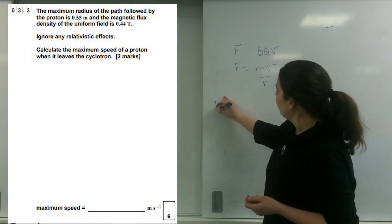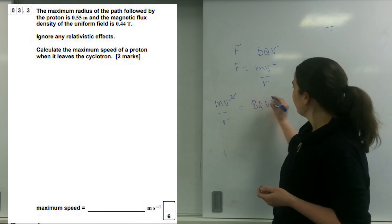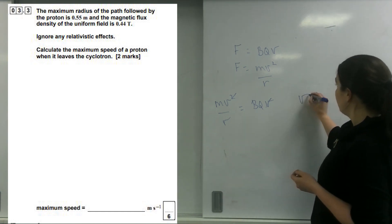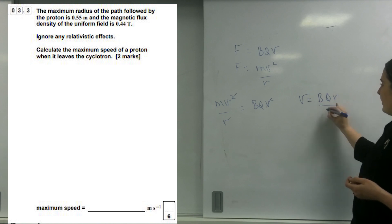Put that in again, mv squared over r equals bqv. That cancels and I end up with wanting the maximum speed. So v equals bqr over m.